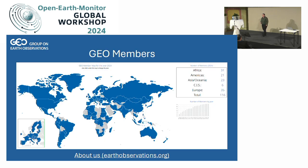So who are we really? The Group on Earth Observation is made up today of 116 member states. Each member state has what we call a GEO principal — a representative within the country, within the government — advocating the usage of Earth Observation data within the issues that the countries are facing. You can see in the map that we still have some challenges in Africa, but GEO has been existing for 20 years now.